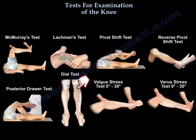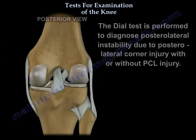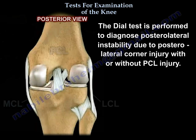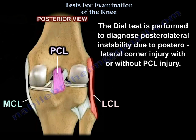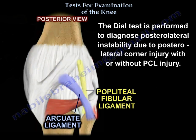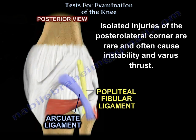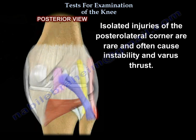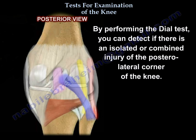The dial test is performed to diagnose posterolateral instability due to posterolateral corner injury, with or without PCL injury. Isolated injuries of the posterolateral corner are rare and often cause instability and varus thrust. By performing the dial test, the physician can detect whether there is an isolated or combined injury of the posterolateral corner of the knee.